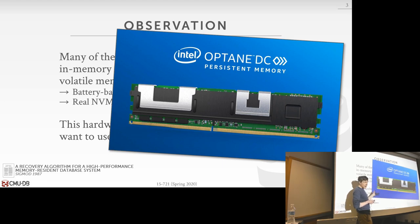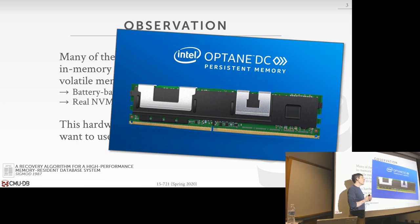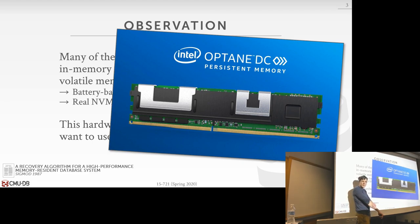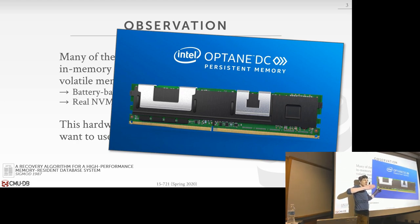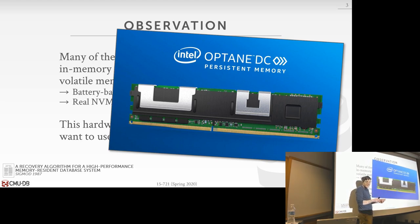We're not going to talk about NVM or persistent memory right now — that's covered at the end of the semester. On pricing: it's not outlandish, maybe a couple thousand dollars for 128GB. Intel doesn't publish exact prices. It's more expensive than DRAM and SSDs, but has properties you can't get from an SSD. You can also get it in a PCIe form factor using phase-change memory, where prices are closer to SSDs, but the DIMM form is pricier.